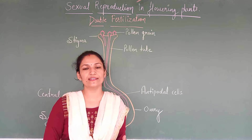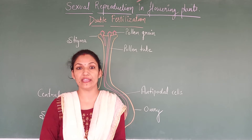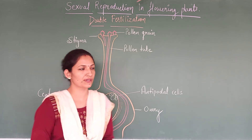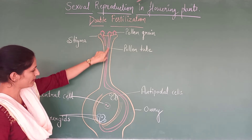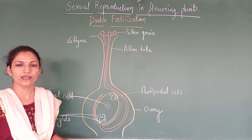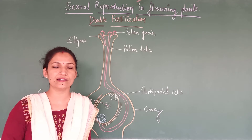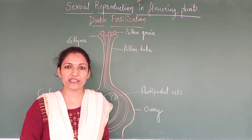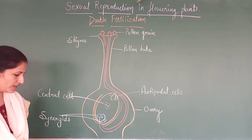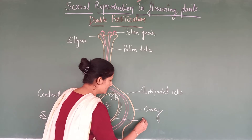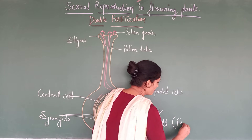Pollen grains will take the nourishment from the stigma and they will go on to germinate to form the pollen tube. As you can see, this is the starting of the germination of the pollen tube, and here the complete pollen tube is formed. This pollen tube is acting as a messenger for taking the male gamete to the female gamete. Over here, this bigger cell is the egg cell, and this egg cell is the female gamete.